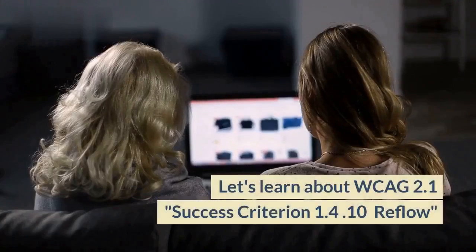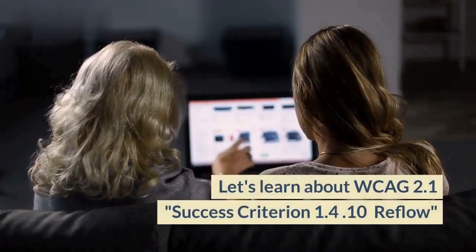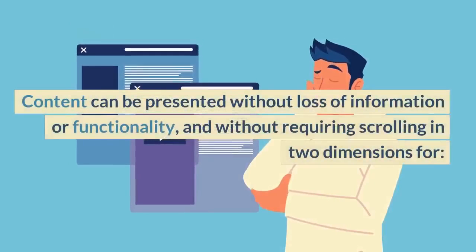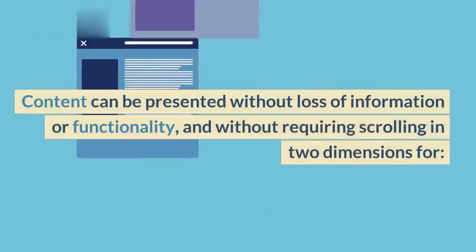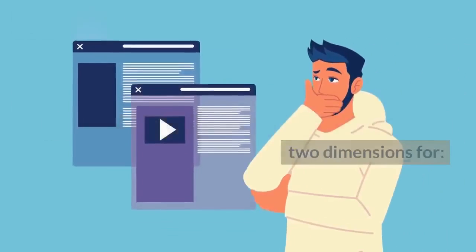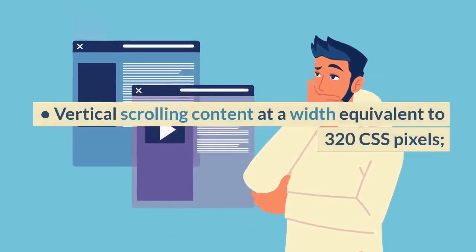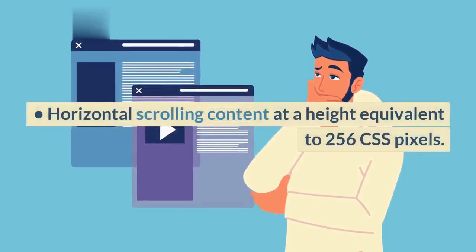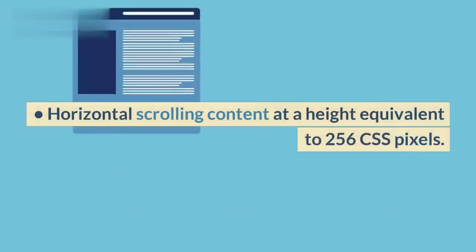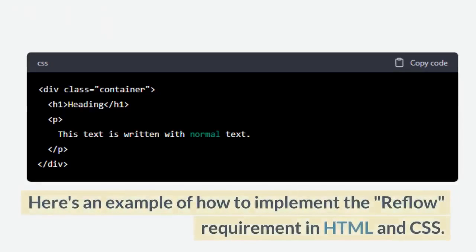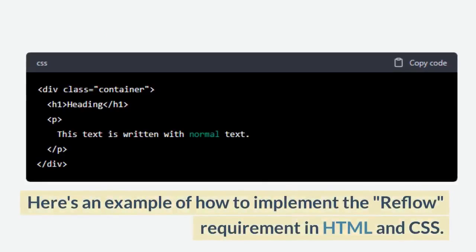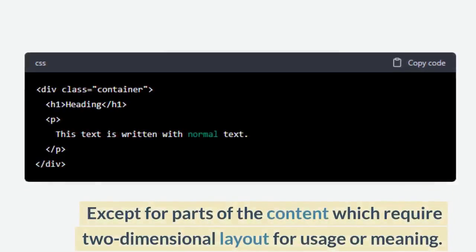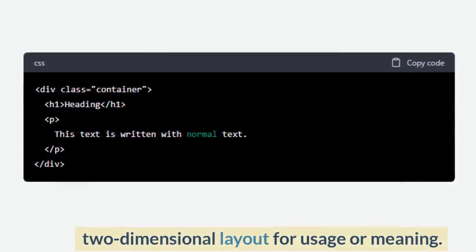Let's learn about WCAG 2.1 Success Criterion 1.4.10 Reflow. Content can be presented without loss of information or functionality, and without requiring scrolling in two dimensions for vertical scrolling content at a width equivalent to 320 CSS pixels, and horizontal scrolling content at a height equivalent to 256 CSS pixels. Here's an example of how to implement the reflow requirement in HTML and CSS, except for parts of the content which require two-dimensional layout for usage or meaning.